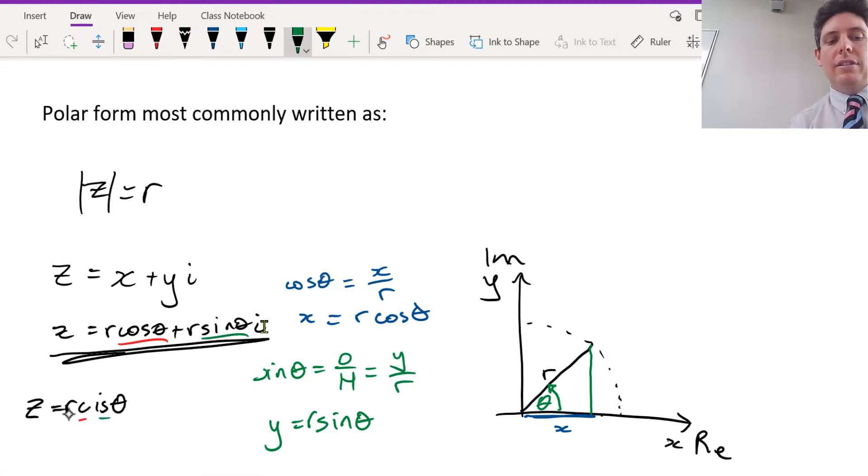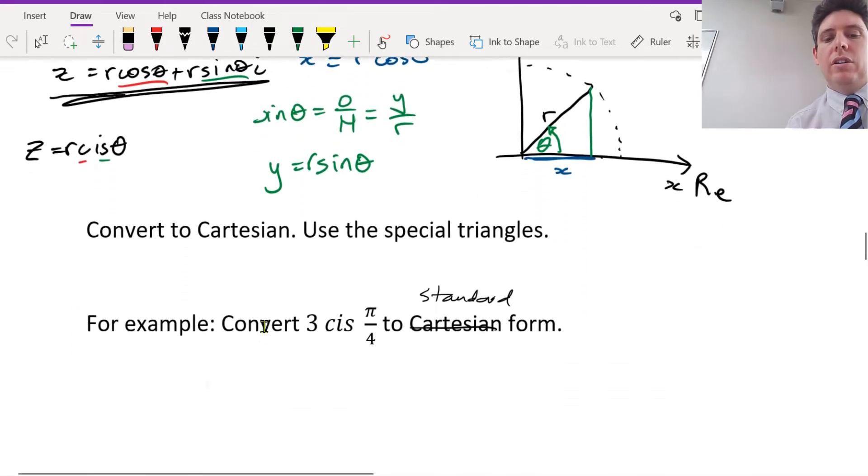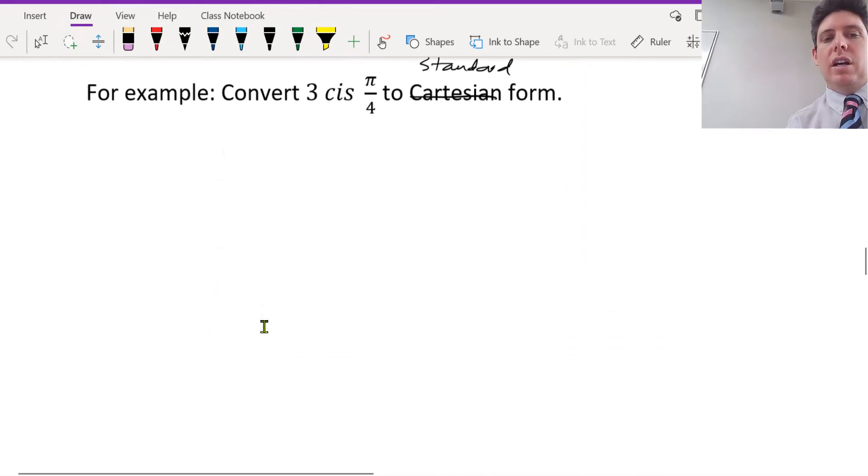So you've got, and it has the modulus or the radius at the start, and the argument or the theta at the end. Okay, so let's do an example.